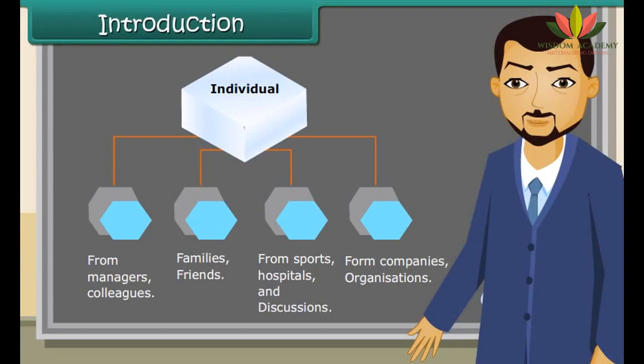Types of data: Primary data and Secondary data. Data which are not originally collected but obtained from published or unpublished sources are called secondary data.